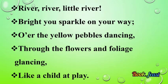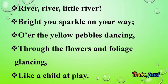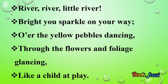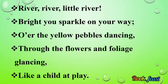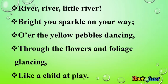Stanza 1: 'River, river, little river, bright you sparkle on your way, over the yellow pebbles, dancing through flowers and foliage, glancing like a child at play.' The river is very little and the poet starts with an exclamation. The river sparkles because of the sunlight as it goes along. It crosses over the yellow pebbles dancing. Foliage is a cluster of leaves, flowers, and branches, while 'glancing' means touching something without hurting or damaging it. The river moves through the flowers and branches, touching them lightly like a little child at play.